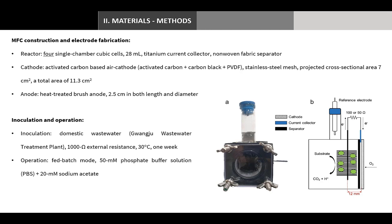For materials and methods, single chamber cubic microbial fuel cells were constructed using a polycarbonate cube. The cubic chamber had an empty cylindrical bed volume of 28 milliliters. A titanium plate was used as a cathode current collector, and a non-woven fabric was attached onto the projected side of the cathode to prevent short circuits. An activated carbon-based air cathode using polyvinylidene fluoride as a binder was used in this study.